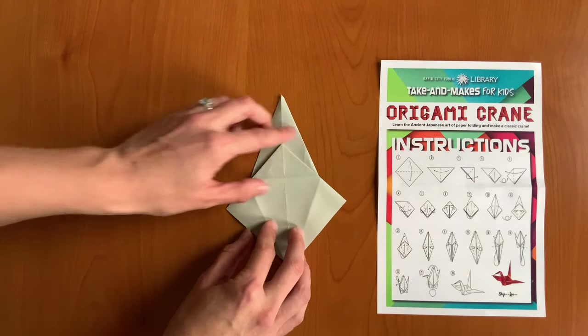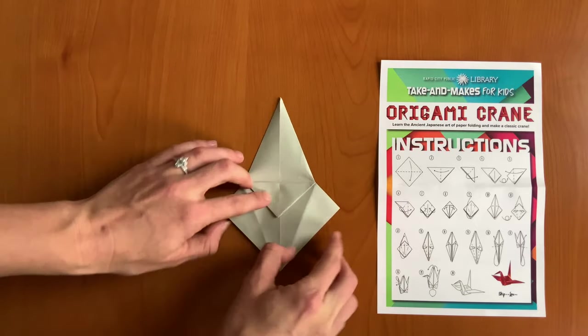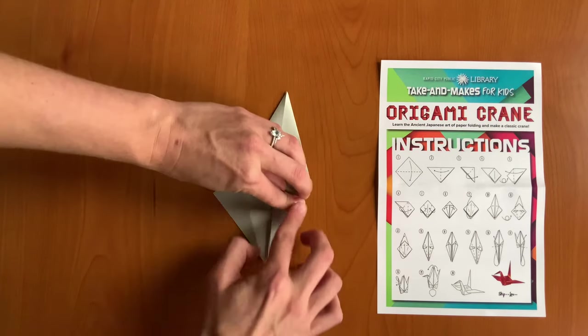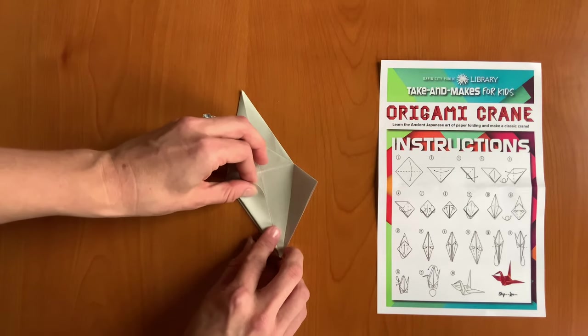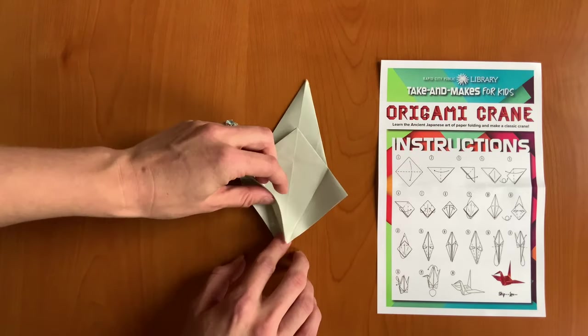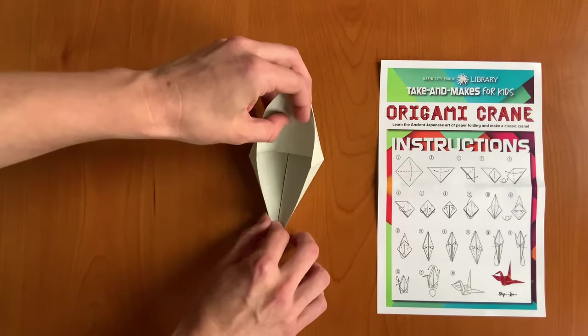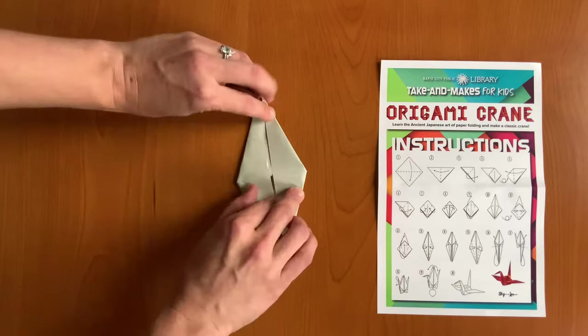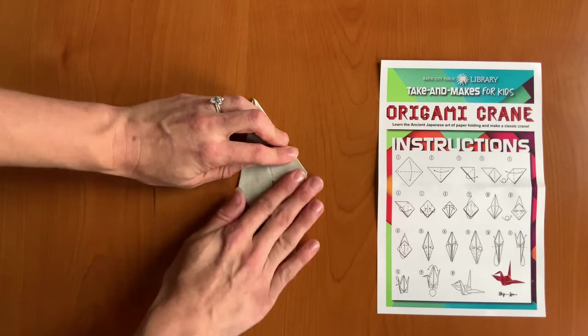Now we're going to flip and do the same thing on this side. So let's fold down this top part again to make a nice crease. We'll fold these guys in again to this center line to make a nice crease. And unfold. And then the same thing, holding the middle part down. We're just going to open up and squash fold down. There we go.